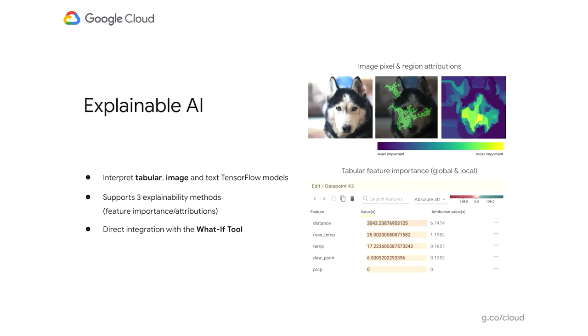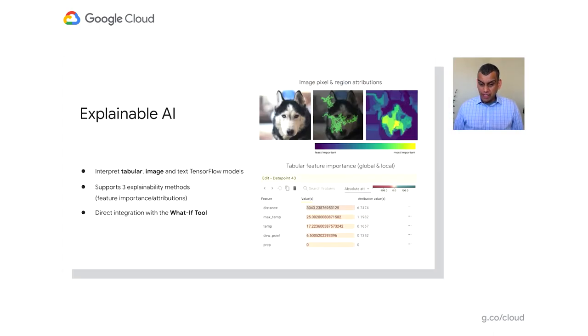One tool built into AI Platform Notebooks is Explainable AI — a set of libraries that help you figure out why your model made a particular prediction. On the right, you can see a color-coded heatmap of what the most important features were in making a particular prediction. Explainable AI can be used with tabular, image, text, and TensorFlow models. It also ships with a built-in what-if tool, with which you can change the values for attributes in your model and figure out how much it impacts the prediction. Explainable AI libraries are already available in some of our deep learning distributions today and will be available in more in the coming weeks.